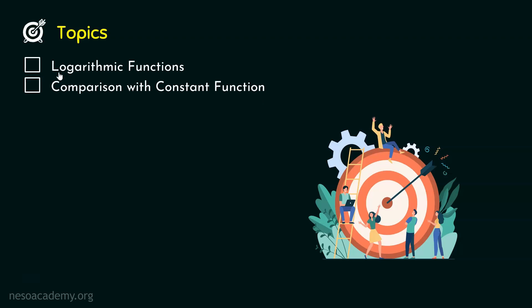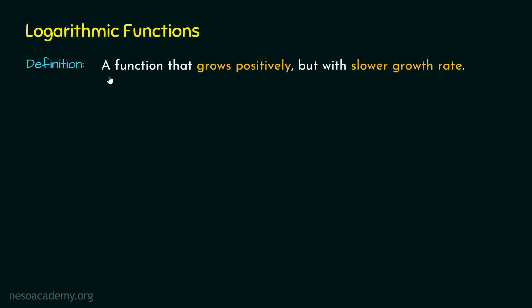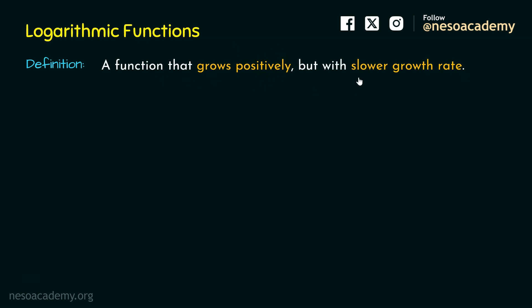A logarithmic function is a function that grows positively but with a slower growth rate. It increases positively and it is bigger than the constant function.